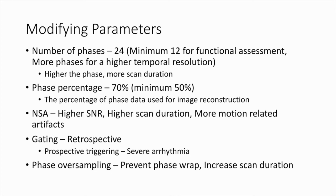Phase percentage is the percentage of phase data used in image reconstruction — ideally kept at 70% and should not be reduced below 50%. Increasing NSA increases the signal-to-noise ratio and scan time, but also increases motion artifacts. Cine images usually use retrospective gating; however, in severe arrhythmias a prospective triggering can be used. In the presence of phase wrap, phase oversampling can be used to prevent it, though this will increase scan duration.